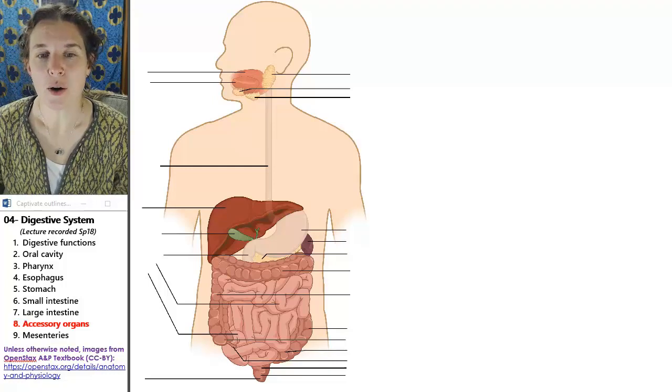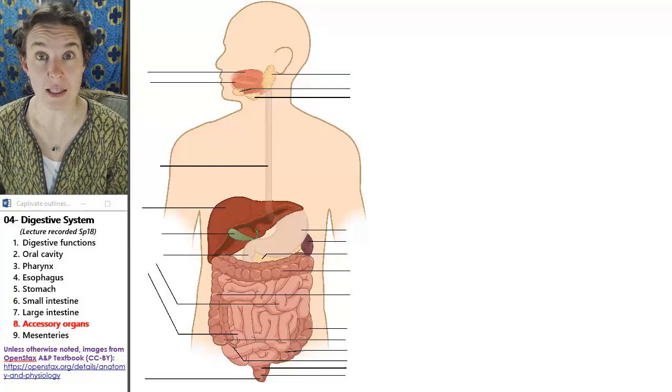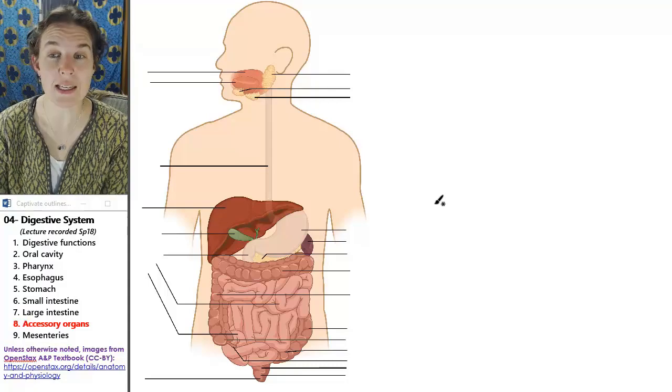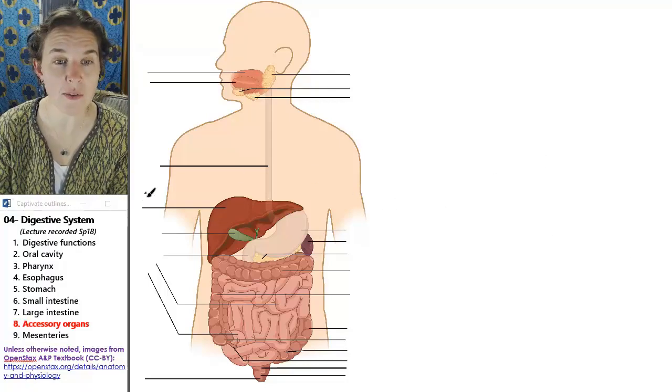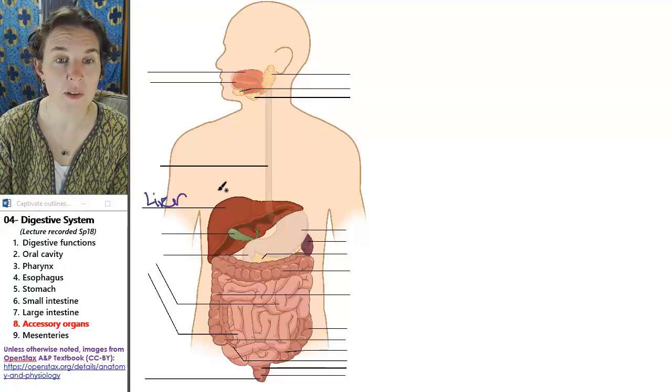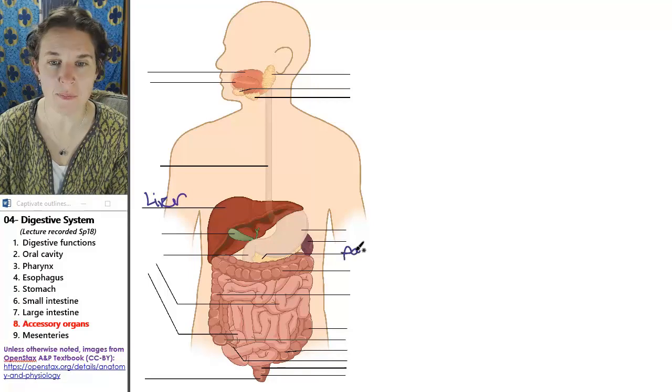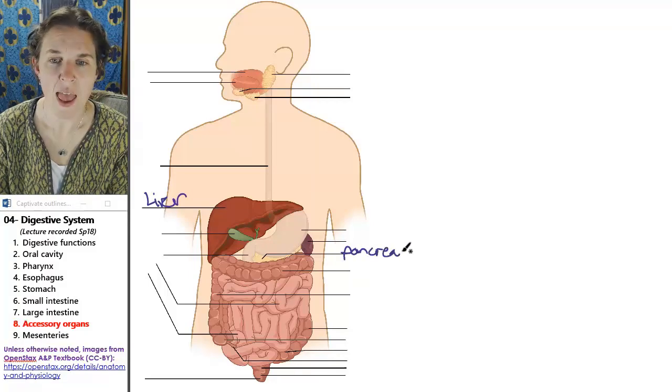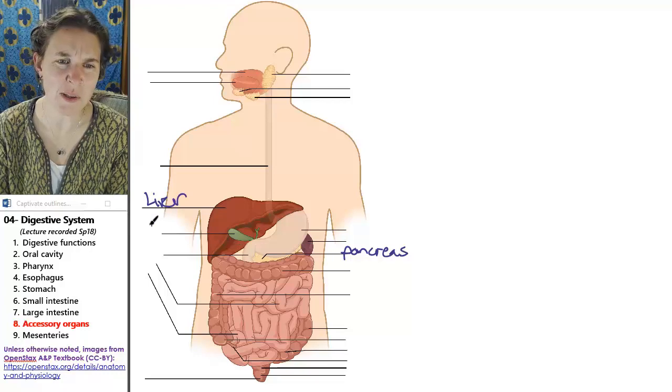There actually are many accessory organs. In this section, we're going to talk about the liver and the pancreas, and we're going to talk about the gallbladder, too.